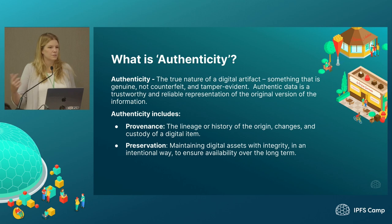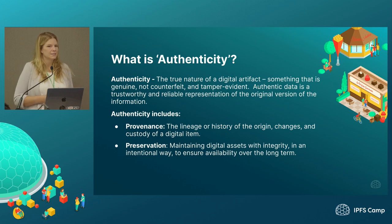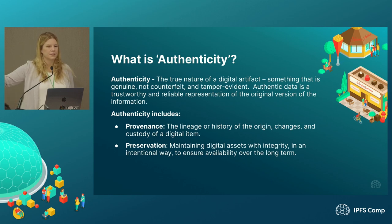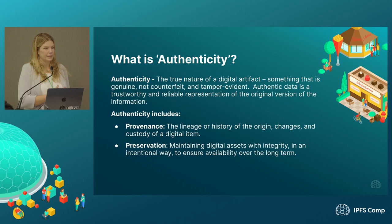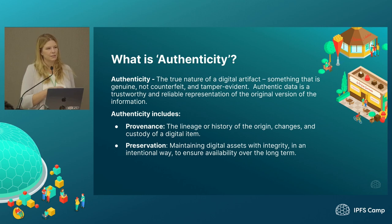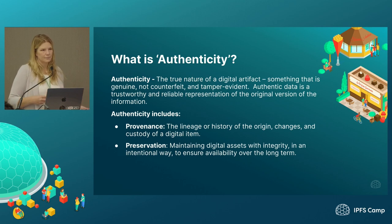A lot of times with mis- and disinformation, there are different ways to do it. You can edit a photograph — that's a deep fake. But sometimes you don't even need to do that. Sometimes you just misrepresent it — it's not from Syria, it was taken 20 years ago in a different place. So authenticity includes provenance, which is really everything that we do. It's the lineage or history — the origins, changes, and custody of a digital item. We seal each piece of the provenance with cryptography so we know exactly where it came from, where it's been, and how it's been changed.